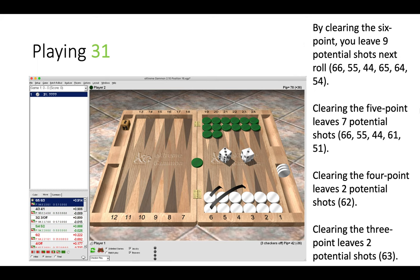Now what about 3-1? Now 3-1, it is correct to clear the 6-point, but you can see that the moves are quite close on the left. Now by clearing the 6-point, we leave 9 potential shots next roll. Clearing the 5-point leaves 7 shots. Clearing the 4-point leaves 2. Clearing the 3-point also leaves 2. So why here are we making the play which leaves more shots? Well, this is for two reasons.